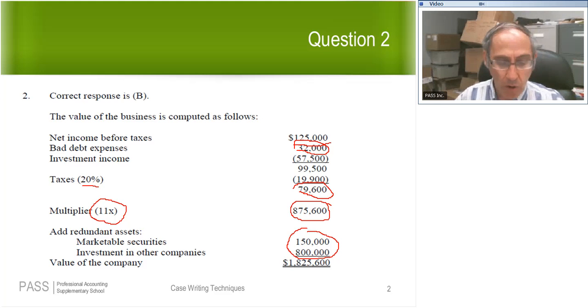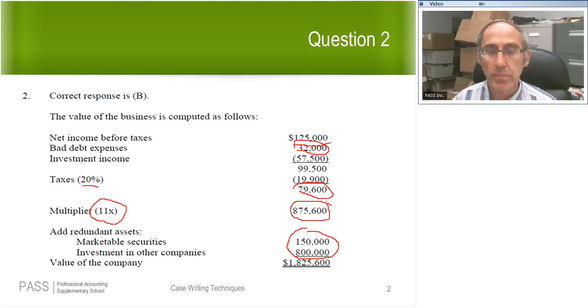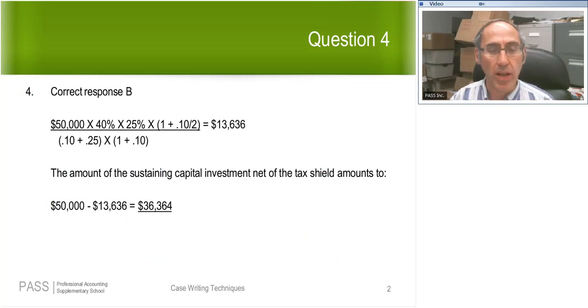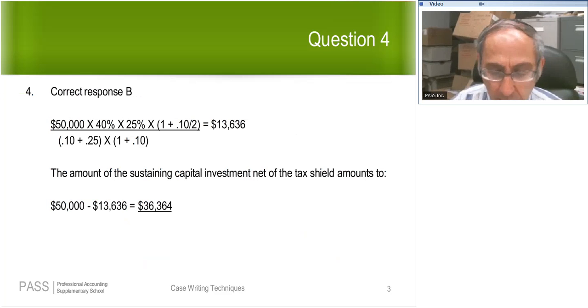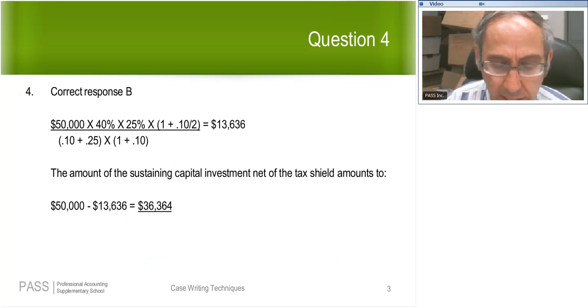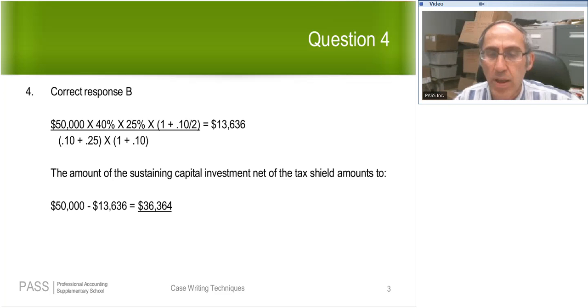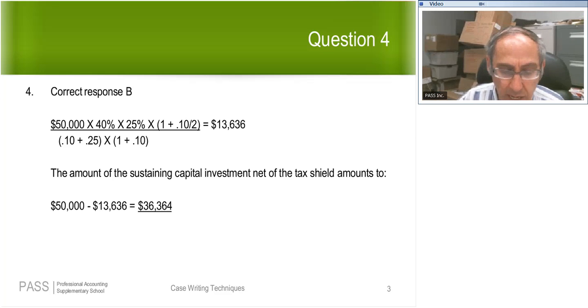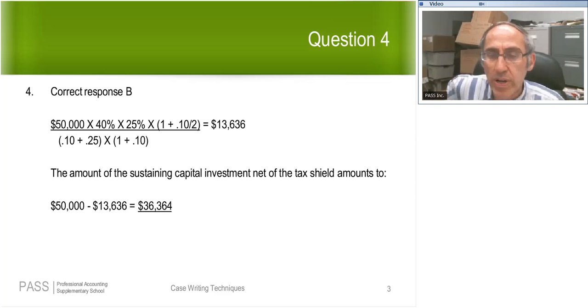Question number four. Do we have any takers for question number four? Which of the following is the amount of sustaining capital reinvestment net of the tax shield? Okay, the right answer would be as follows. I have to make a call. Should I be using 50K before considering taxes or should I be using 90K before considering taxes? Before I consider the tax shield, I have to figure out what's my sustaining capital reinvestment before even thinking about the tax shield. Why did I choose the 50 rather than 90? Because remember, the sustaining capital reinvestment is supposed to represent the amount of money you're going to need to spend each year, not to grow your operation, but simply to sustain it.